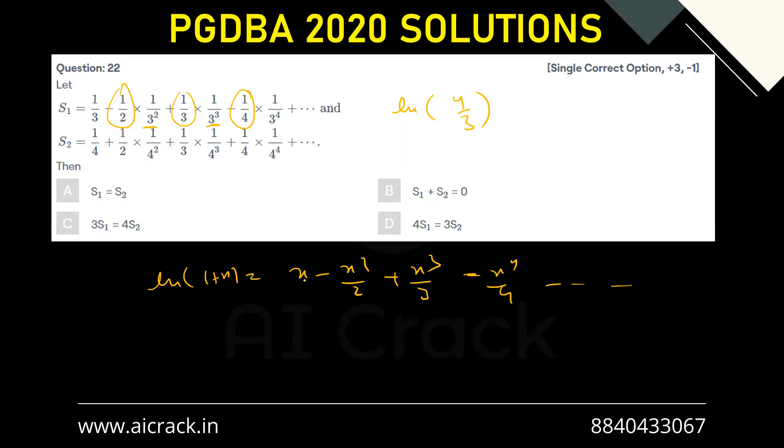If I put x = 1/4 over here, but the problem is we have a minus sign over here, but we have a positive sign over here. So what can be done? We can take minus of ln(1+x), and if we replace x with -1/4.